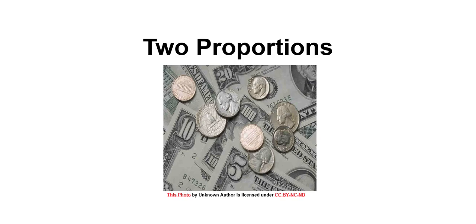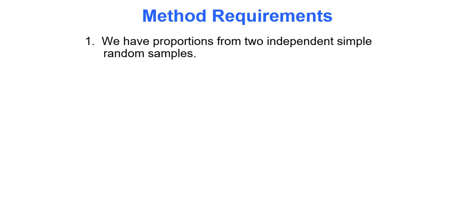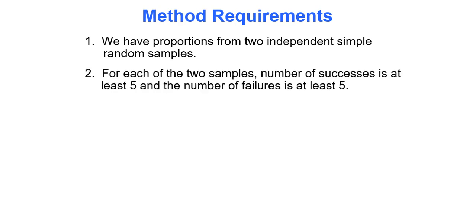First we'll start off with two proportions. To use the method we're about to use, the following requirements must hold: you must have proportions from two simple random samples that are independent, and for each of the two samples the number of successes is at least five and the number of failures is at least five.